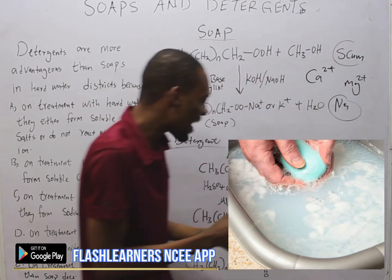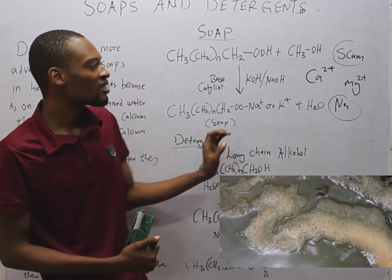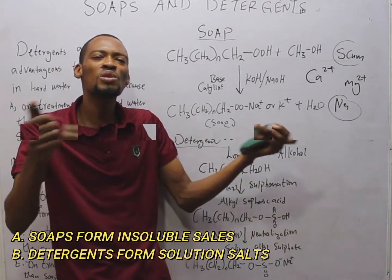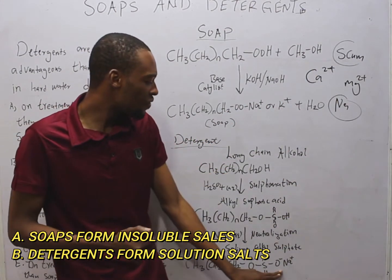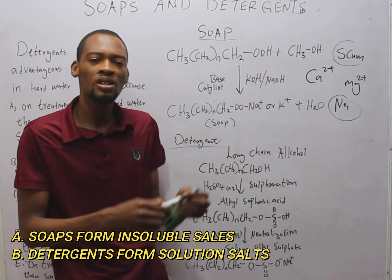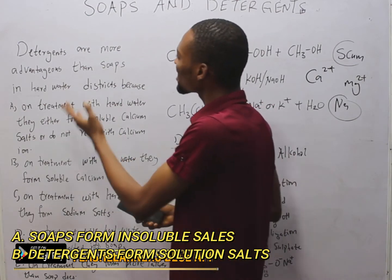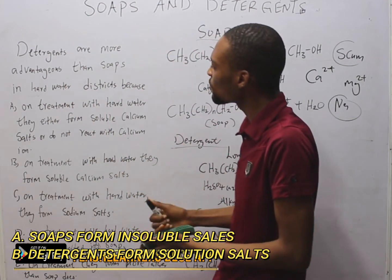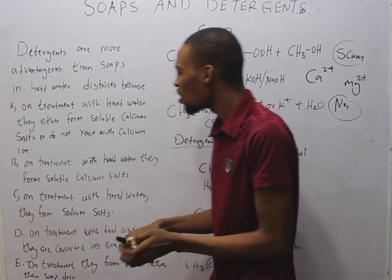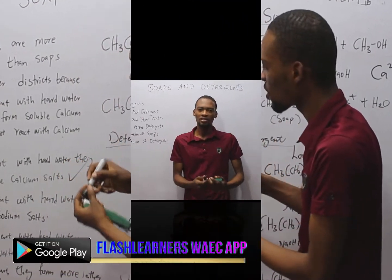Meanwhile, the sodium salts in detergents react with calcium and magnesium ions to form soluble salts. So while detergent salts are soluble in water, soap salts are not. Looking at this question: detergents are more advantageous than soap in hard water districts simply because, on treatment with hard water, they form soluble calcium salts.